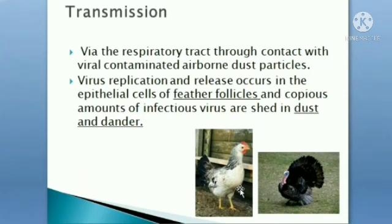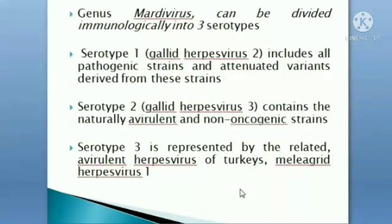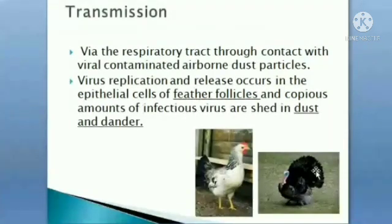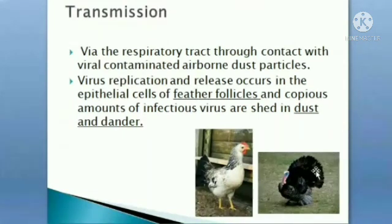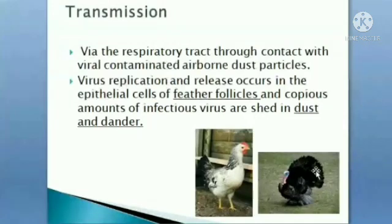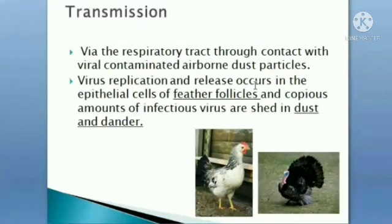Initially, the vaccine for Marek's disease used Meleagrid Herpesvirus 1, the turkey herpesvirus vaccine. Transmission is via the respiratory tract through contact with viral-contaminated airborne dust particles. The virus is present in feather follicle epithelial cells, where viral replication and release occur. Copious amounts of infectious virus are shed in dust and dander from feather follicles.